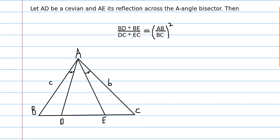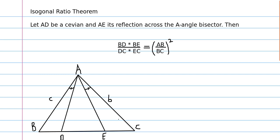We're going to prove this general theorem. You have AD and AE are isogonal conjugate, and then their ratios BD over DC times BE over EC